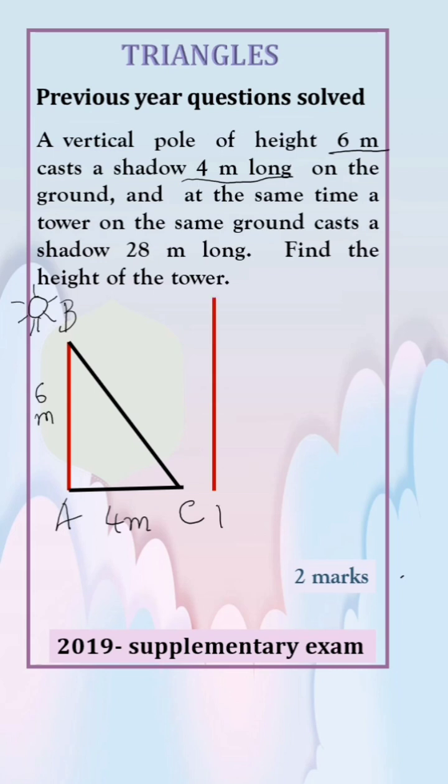Let DE be the tower, DF be the shadow formed by it. Its length is 28 meters. We have to find the height of the tower.